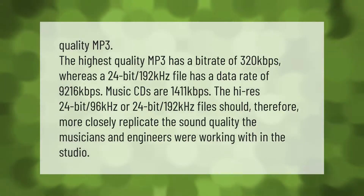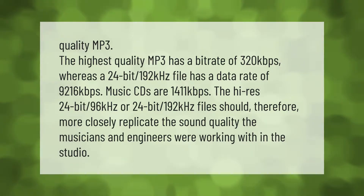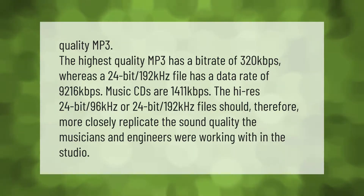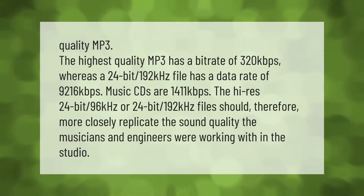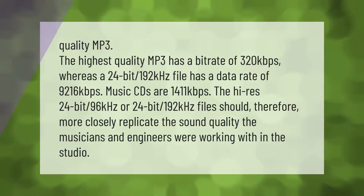The highest quality MP3 has a bitrate of 320 kilobits per second, whereas a 24-bit 192 kilohertz file has a data rate of 9,216 kilobits per second. Music CDs are 1,411 kilobits per second. The high-res 24-bit 96 kilohertz or 24-bit 192 kilohertz files should therefore more closely replicate the sound quality the musicians and engineers were working with in the studio.